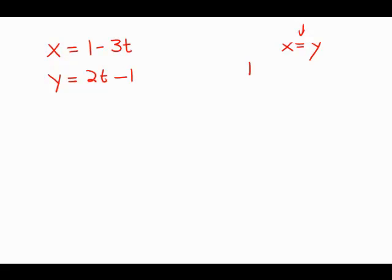that means that what x equals, 1 minus 3t, must be equal to what y equals, 2t minus 1. We merely substituted the other two equations into this equation.